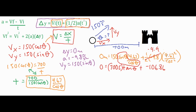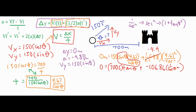We have negative 106.86 times one over cosine squared theta. Using the trig identity, 1 over cosine squared equals secant squared, and secant squared equals 1 plus tangent squared. We substitute that in to get a common trig function — tangent of theta — throughout the equation.